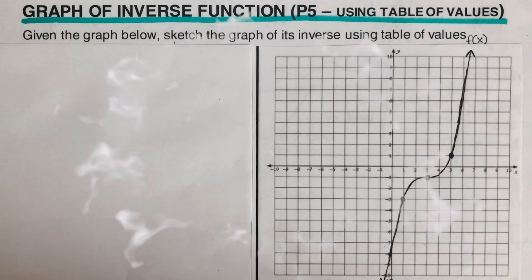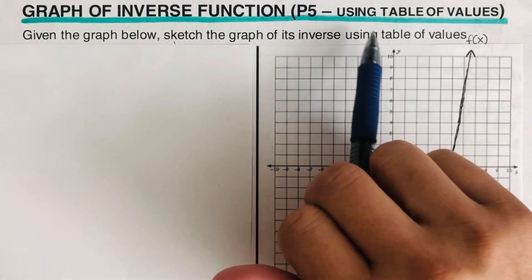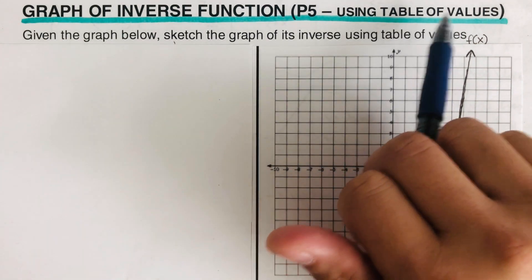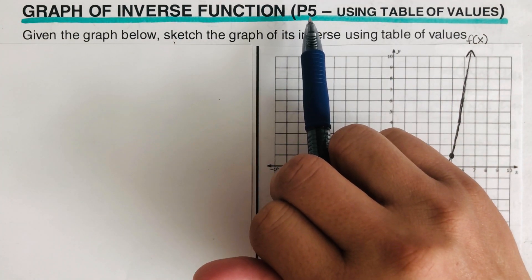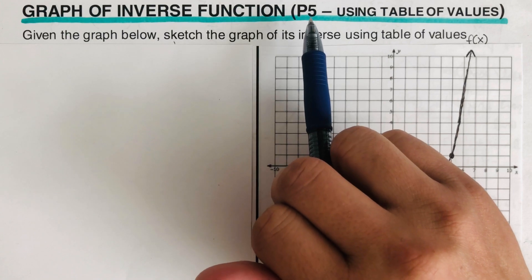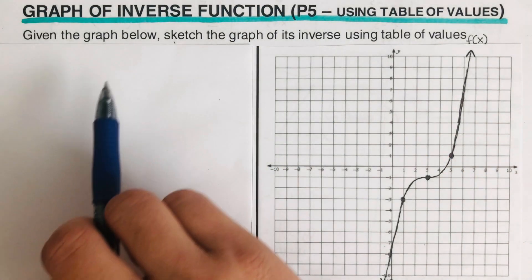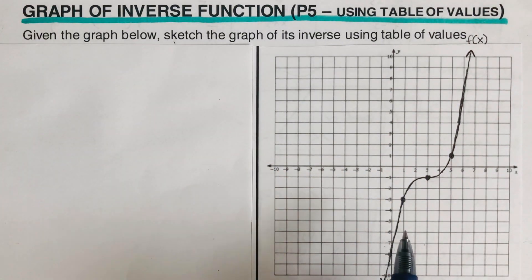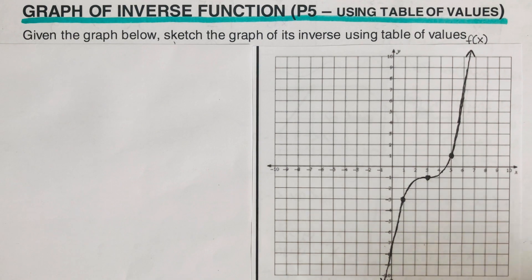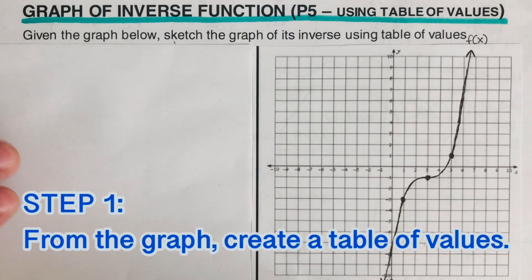Hello everyone. In this video we are going to graph inverse functions using table of values, and this is the fifth part — I will put the link of the first, second, third, and fourth part in the description box below. Let's take this first example: given the graph below, sketch the graph of its inverse using table of values. The first step is to create a table from the graph.